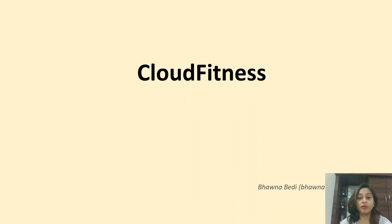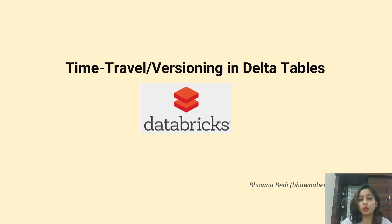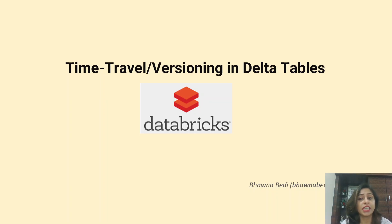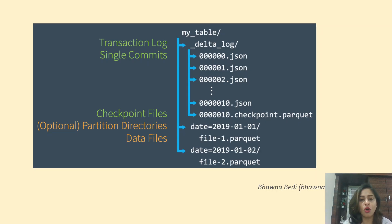Hello and welcome to everybody on Cloud Fitness. In this video I will continue my series on Delta tables. In this particular video we will talk about time travel and versioning in Delta tables. We will see how a Delta table maintains history. What you see on the screen right now is a snapshot of a transaction log, which I showed you in the last video.